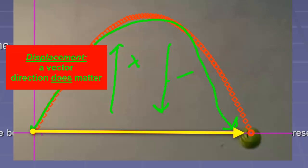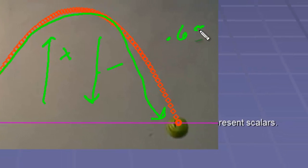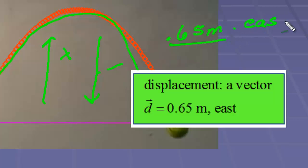So with a vector, we have .65 meters for our total distance. And we would actually have to say it was .65 meters to the right, which in general is called east. So .65 meters east. And that would be a vector.